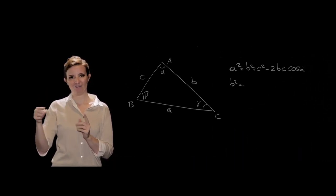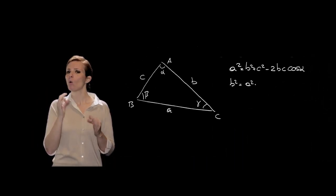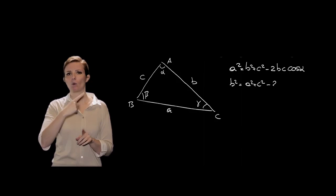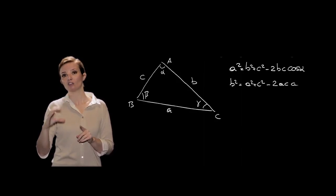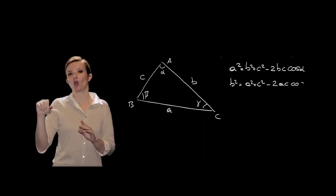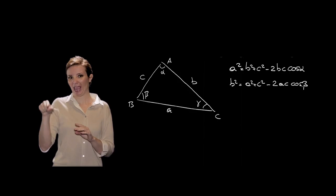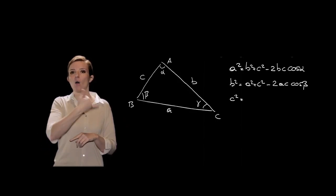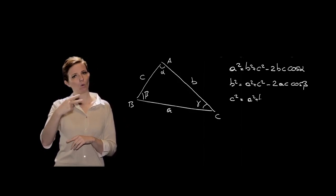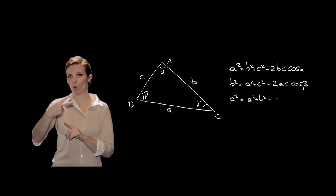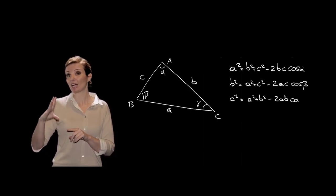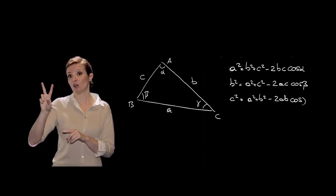Lo stesso discorso vale per B²: B² = A² + C² - 2AC·cos(β). E infine C² = A² + B² - 2AB·cos(γ).